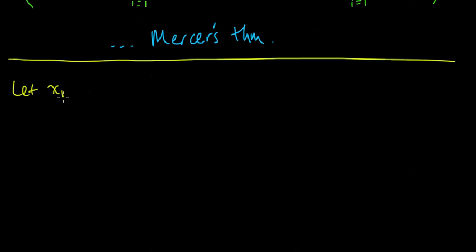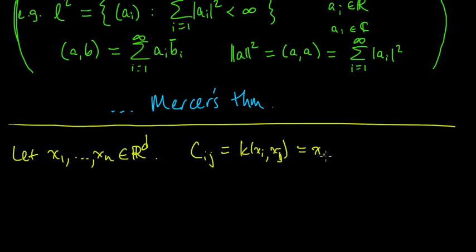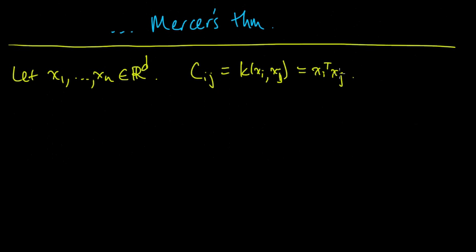Let's check. So we need to let, following that prescription, let X1 to XN be in RD. And we form the matrix C, and this entry Cij is K(xi, Xj), which by the definition of our kernel, we're looking at this one here, is Xi transpose Xj. And now we want to show that that C is positive semi-definite. Symmetric, well, so first let's see that it's symmetric. That's obvious enough, because if we were to switch i and j, then we just get back the same thing. The inner product of Xi with Xj is the inner product of Xj with Xi. So that's simple.